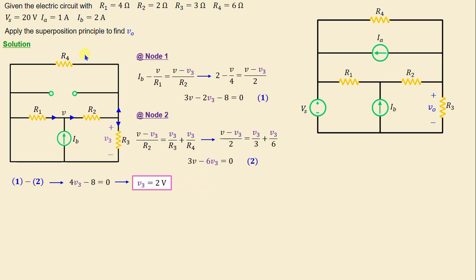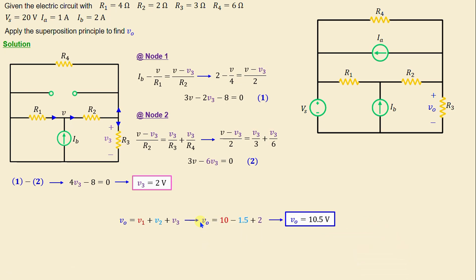After completing the analysis for each independent source while treating the others as turned off, the next step is to combine the results algebraically. This enables us to determine the overall circuit response: Vo = V1 + V2 + V3. Replacing V1, V2, and V3 with their numerical values, we obtain Vo = 10.5 volts.